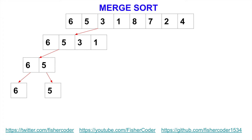We can compare in this case, right? So what's the right order for 6 and 5? It should be 5 and 6. So we put them in the sorted order. After we have finished this level, we can go back to this level — this level we have sorted, and then we go back up.